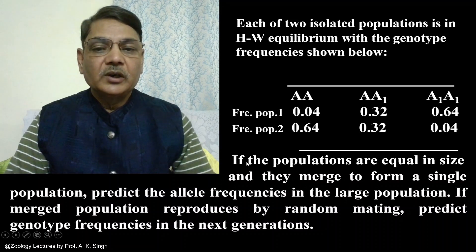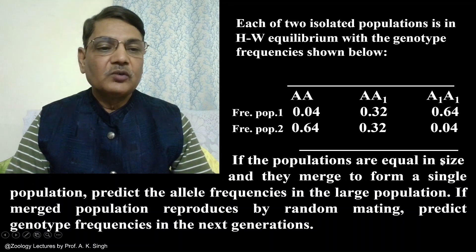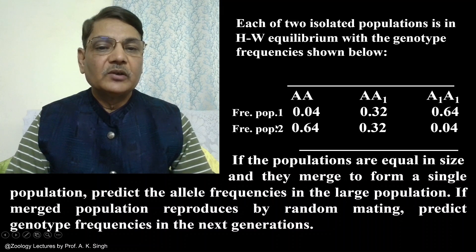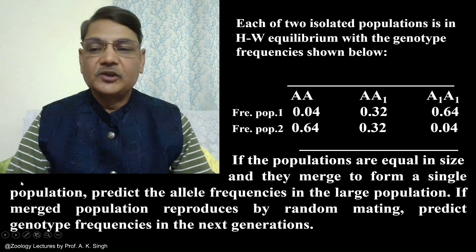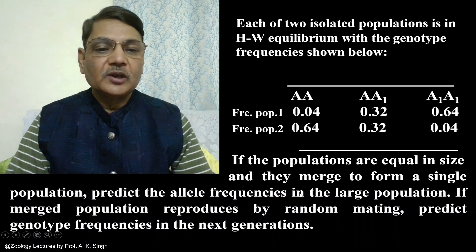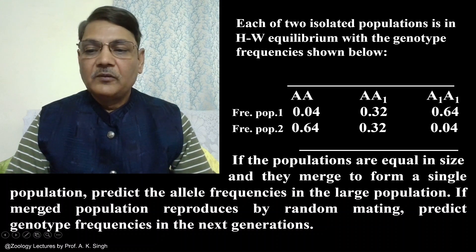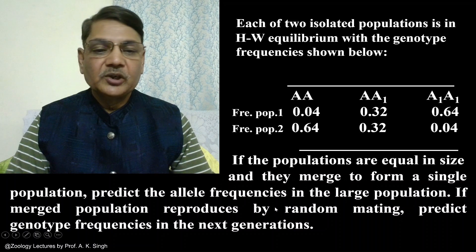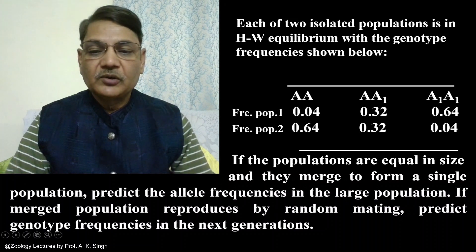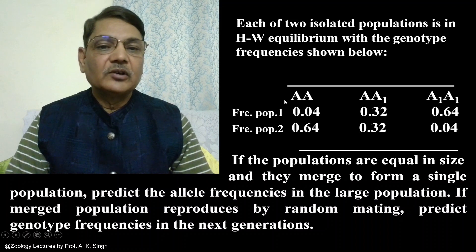Now the question is: if the populations are equal in size and these two populations are merged to form a single population, then predict the allele frequency in the merged population. If the merged population reproduces by random mating, then predict the genotype frequencies in the next generation.